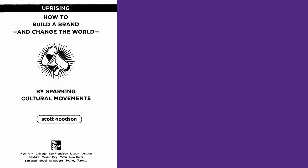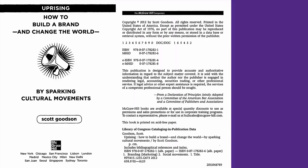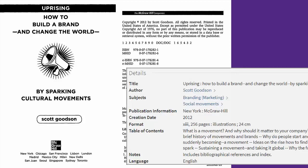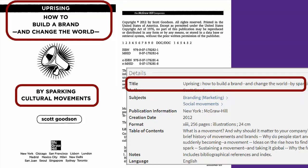Let's look at a sample book. Most of the needed information can be found on either the title or the copyright page near the front of the book, or in the book's record in a library catalog. Here's a book called Uprising: How to Build a Brand and Change the World by Sparking Cultural Movements.